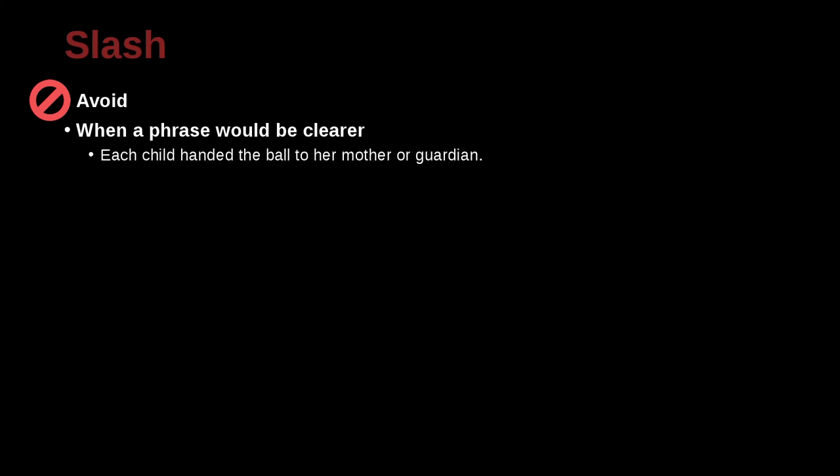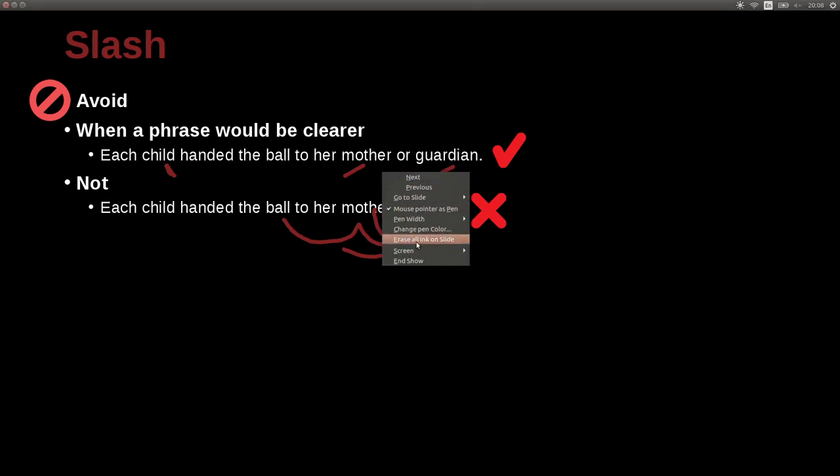Don't use a slash when a phrase would be clear. In other words, don't put words together with a slash when you can make it clear. So here's an example. Each child handed the ball to her mother or guardian. Not each child handed the ball to her mother slash guardian. You see the case here? Mother or guardian. Mother slash guardian. In this case, the child handed the ball. It was probably many children doing this situation. Some handed it to their mother. Some handed it to their guardian. But the individual child handed it just to the mother or just to the guardian. So you cannot say slash because then it would sound like the child took the ball and then gave it to the mother and then gave it to the guardian. So you have to be careful not to combine words with slashes in that kind of case.